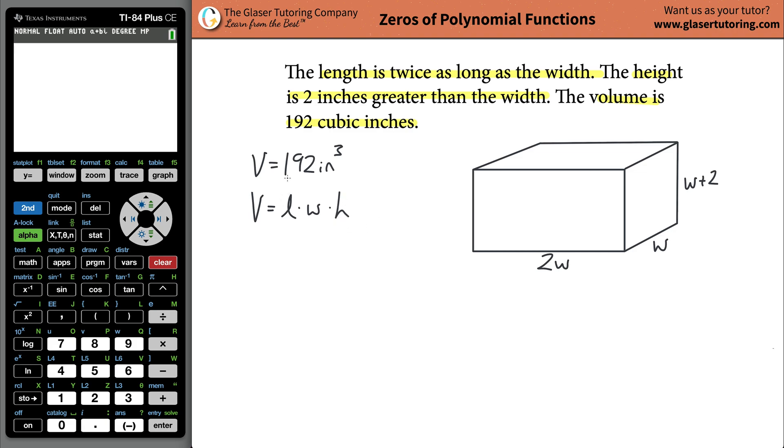I have a math equation now. The volume is 192, and that's equal to the length which we call 2w, the width which we call w, and the height which is w plus 2. Our job here is going to be to solve this.